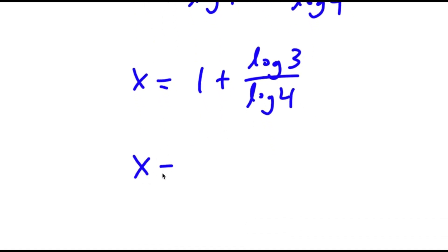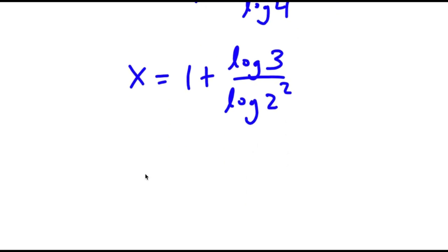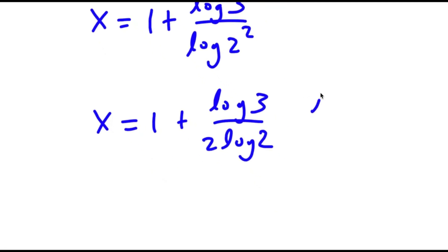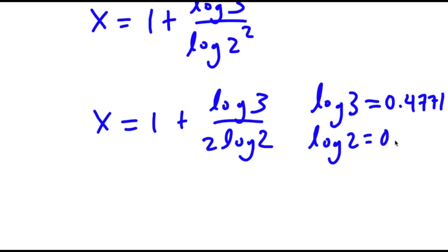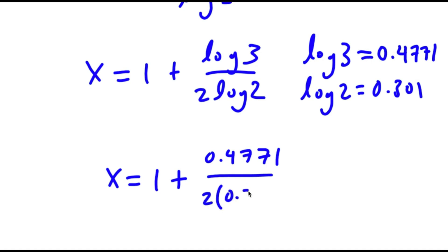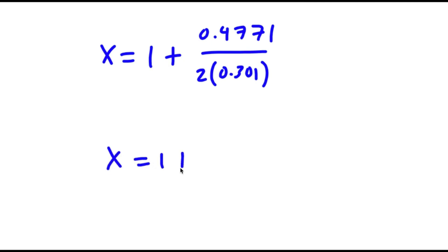Now log 4, that's equal to 2 squared. So I have x is equal to 1 plus log 3 over log 2 squared. And log 2 squared, that's the same thing as 2 times log 2. Now log 3 is equal to 0.4771 and log 2 is equal to 0.301. So now I have x is equal to 1 plus 0.4771 over 2 times 0.301, and this is equal to 1 plus 0.7925, which is equal to 1.7925.